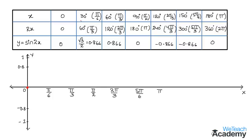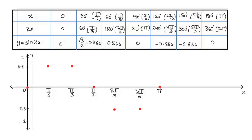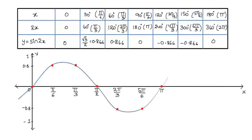For x = 30° we have y = 0.866, so we get a point where pi by 6 and 0.866 intersect. For x = 60° (pi by 3) the value is 0.866, so we get another point. For x = 90° the value of y is 0, so the point lies on the x-axis. For x = 120° (2 pi by 3) we get y = −0.866, and for x = 150° the y value is −0.866. For x = 180° the value of y is 0, giving a point on the x-axis. By joining all these points we get a curve.